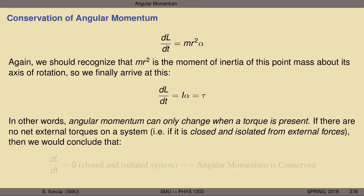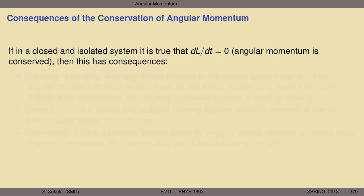If there are no net external torques on a system — if it is closed and isolated — then dL/dt = 0, and angular momentum is conserved. Combined with conservation of total energy and conservation of linear momentum, we now have conservation of angular momentum as a third fundamental conservation law holding in any closed and isolated system.